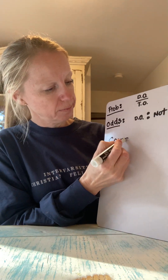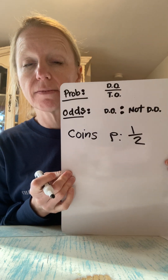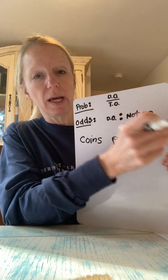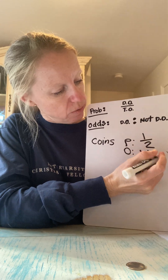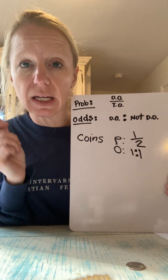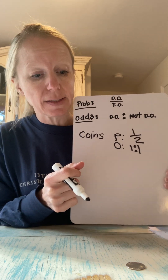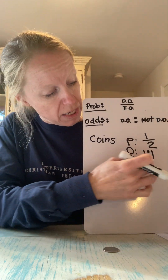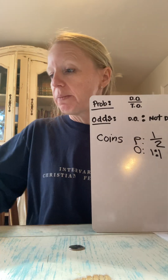For our coin, the probability of getting heads is one out of two. Our odds of getting heads: we have one heads on our coin, and how many outcomes are not our desired outcome? One. So it's a one-to-one odds ratio. Probability is one out of two; odds is one to one. This means the odds of getting heads is even — we have a one-to-one odds ratio of getting heads.